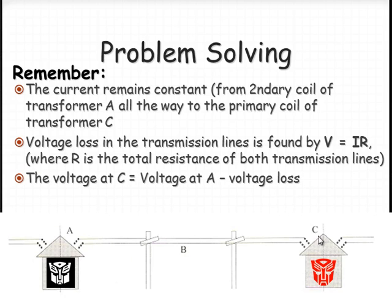So if you want to find the voltage at C in the primary coil, do the voltage here at point A minus the voltage loss. So voltage here equals that voltage minus what you lose in the power lines.